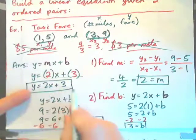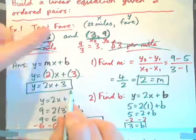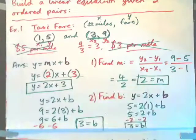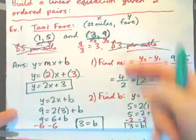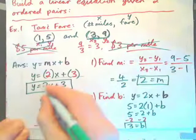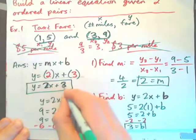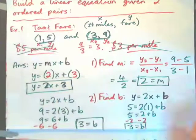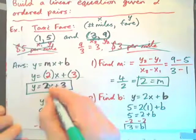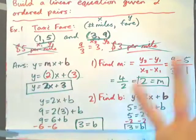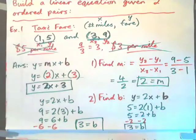This is a taxi fare where one mile costs $5 and three miles costs $9. We need to do these steps because not only does it have a cost per mile, it also has a base fee of $3. If you go no miles in this taxi, he's still going to charge you $3 — that's the charge for just sitting in and putting your bags in. That's the base fee.